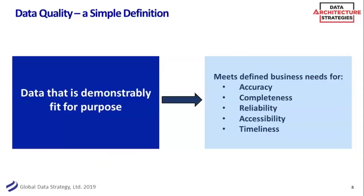Data quality — a simple definition, and this is my definition. There are many definitions out there, some of them very complicated. My favorite is simply: data that is demonstrably fit for purpose. 'Demonstrably' means it's all about quantifying and proving how good your data actually is. An essential component of any data quality management or improvement program is that you can measure the baseline — how good is your data quality now? Put some numbers around that, look at what numbers you need to achieve, and come up with plans for how you get from where you are to where you want to go.